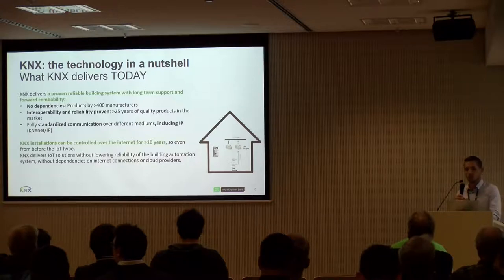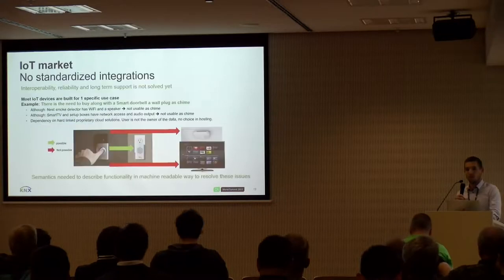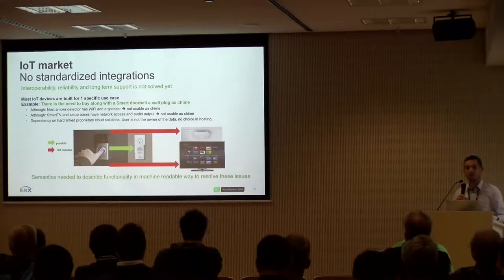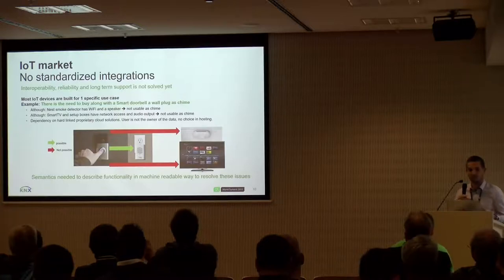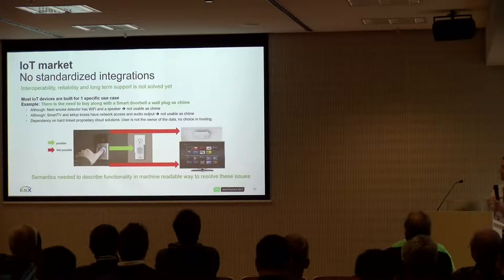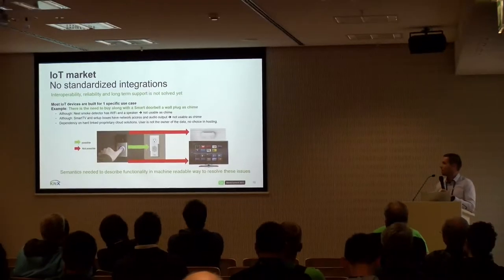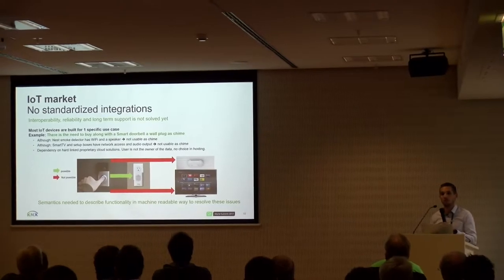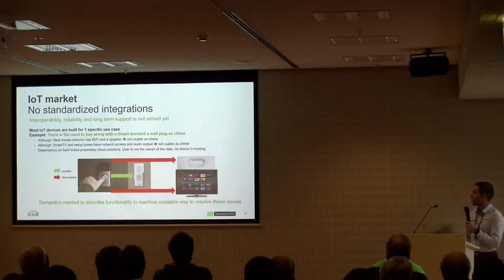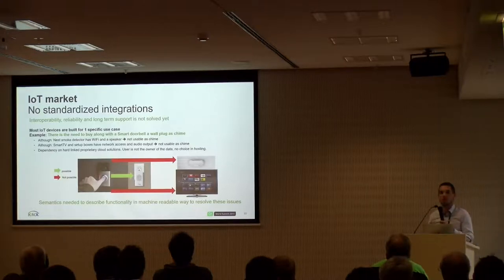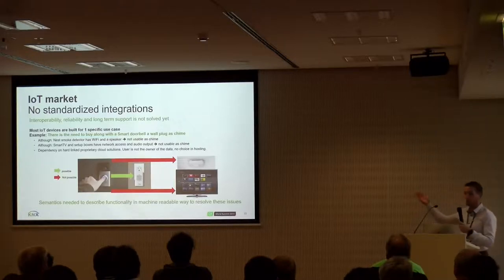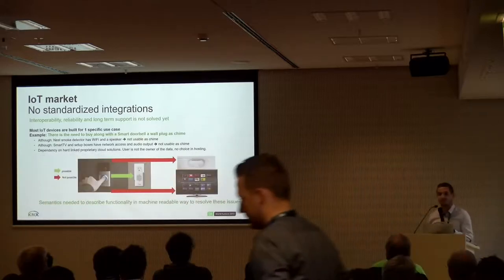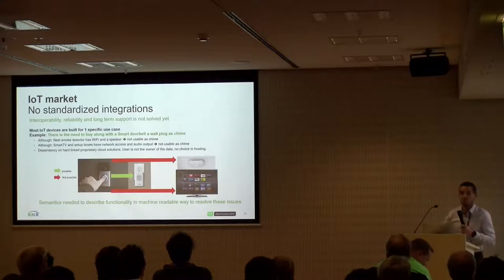The IoT market, on the other hand, has lots of consumer devices that do one use case really well and are attractive because of innovative use cases, but it's very difficult to get things integrated. For example, a Ring doorbell requires a separate chime for audio when someone is at the front door. You can get notifications on your phone, but the Nest smoke detector has a built-in speaker you cannot use for doorbell notifications — even though there's a speaker on every level in your building and a speaker active while you're watching television.